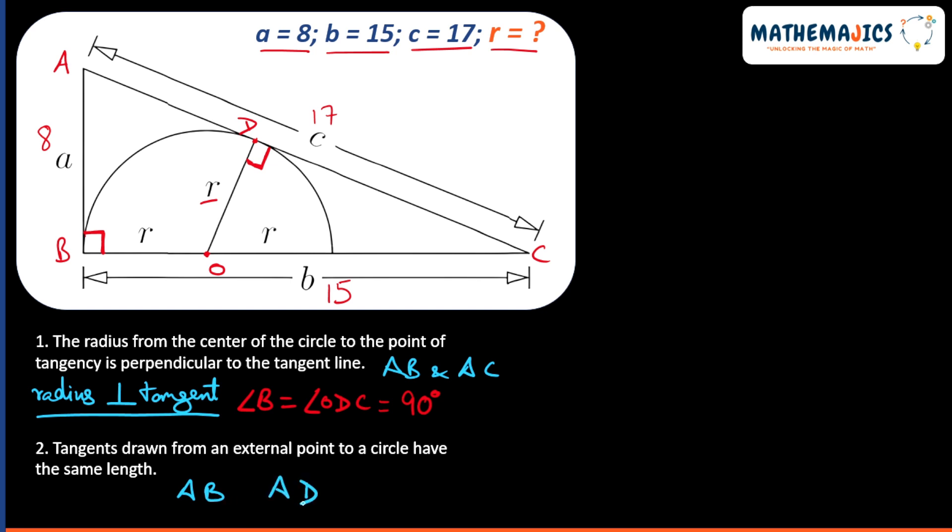So AB and AD are drawn from a common point A outside the circle, so they both will be of equal length. That means AD will also be equal to 8.